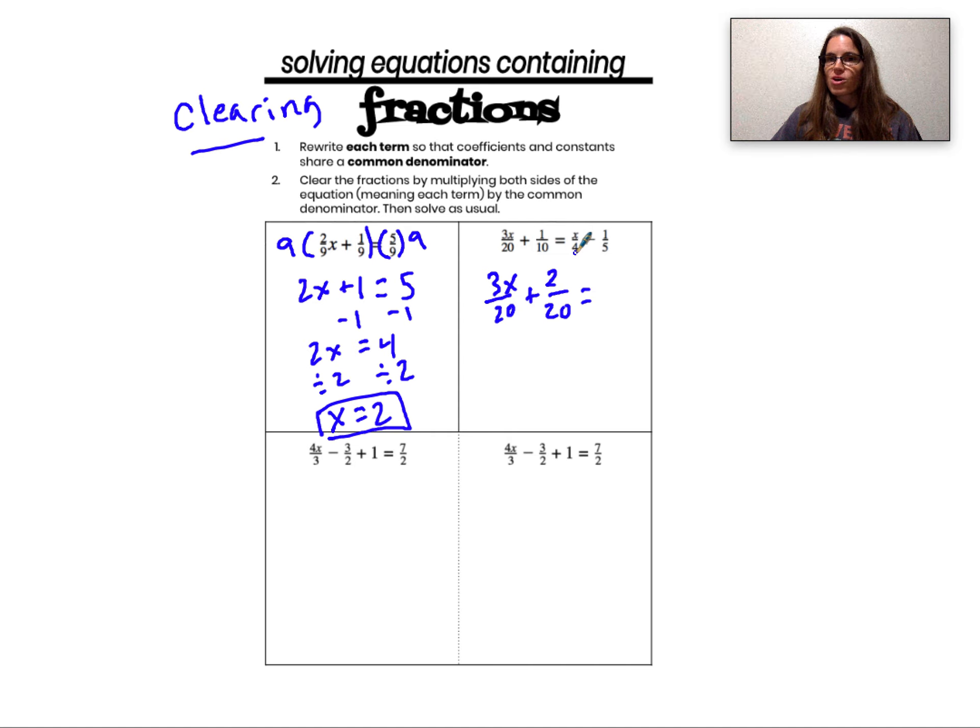So x divided by 4, to have a denominator of 20, I have to multiply the top and the bottom by 5. So x over 4 is now 5x over 20.